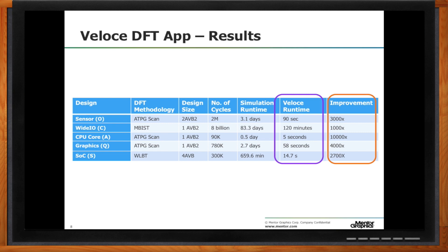We were actually quite surprised to see such an improvement. Traditionally, customers purchase an emulator because it runs faster than simulation — usually about 10x or 20x. Now we're talking about a significantly higher improvement versus simulation runtime. The largest SoC chip we looked at with Veloce DFT was on the order of a couple of hundred times faster. And 100x is already tremendous from a customer perspective — they now consider something that used to be impossible to do before tape-out to now be possible to finish before tape-out. That's the overall value proposition of Veloce DFT.